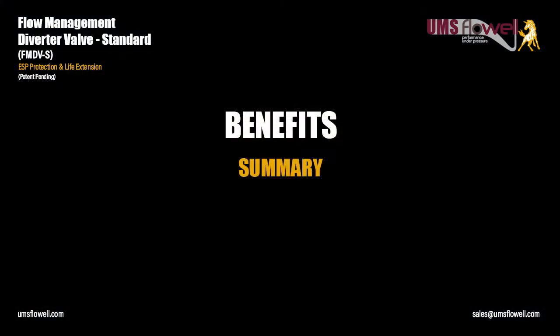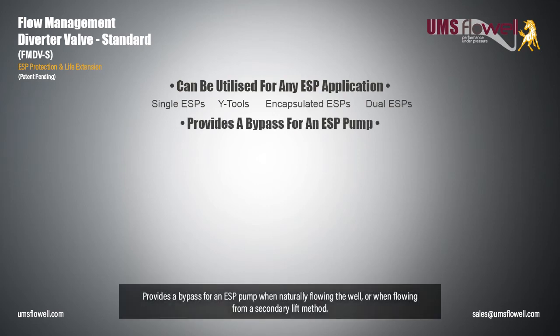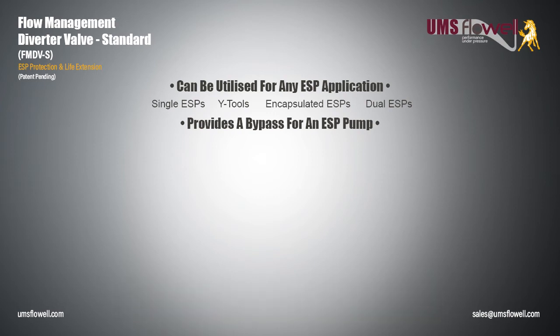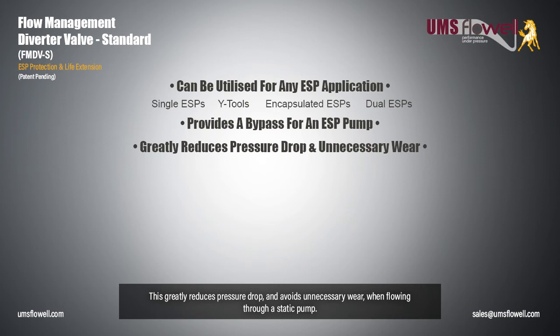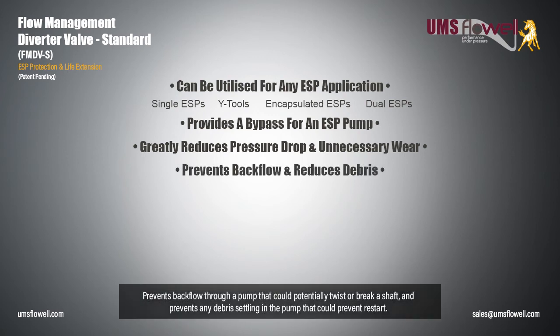Benefits summary. The FMDV can be utilized for any ESP application, including single ESPs, Y-tools, encapsulated ESPs, and dual ESPs. Provides a bypass for an ESP pump when naturally flowing the well, or when flowing from a secondary lift method. This greatly reduces pressure drop and avoids unnecessary wear when flowing through a static pump. Prevents backflow through a pump that could potentially twist or break a shaft, and prevents any debris settling in the pump that could prevent restart.